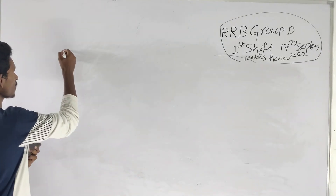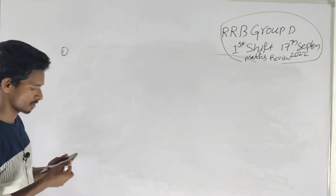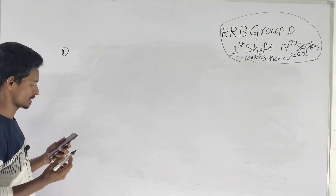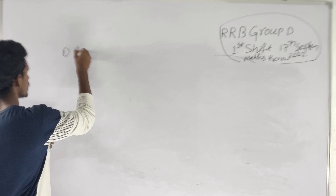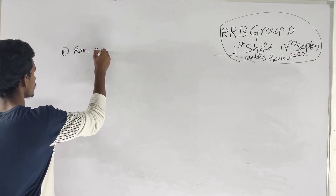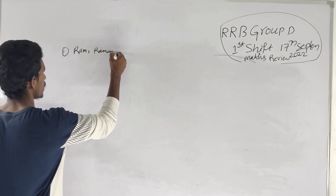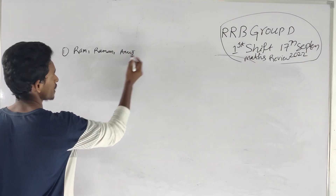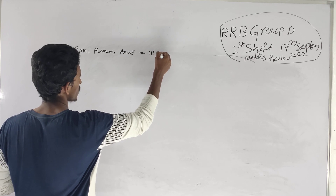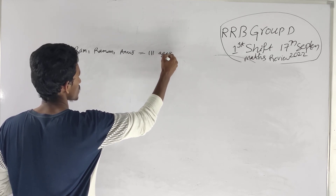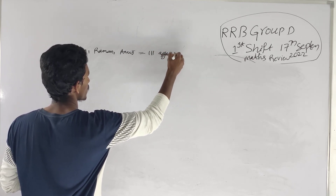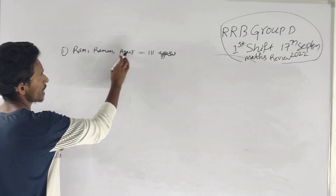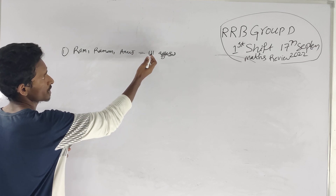The first question is about ages. The ages of three people — Ram, Ramana, and Anuj — are given. The sum of the ages of these three is equal to 111 years.